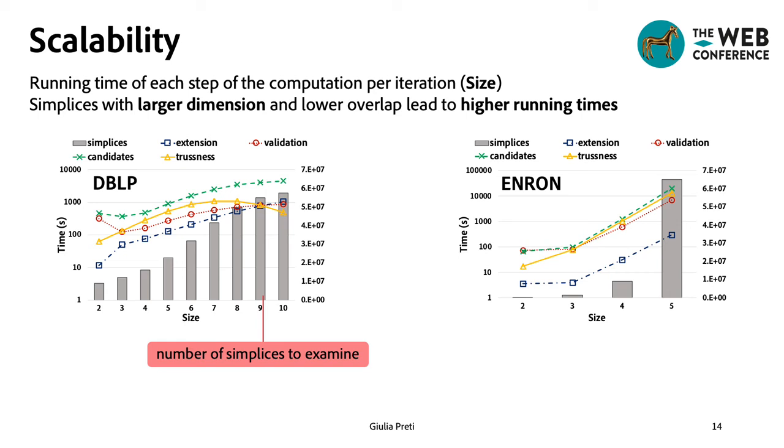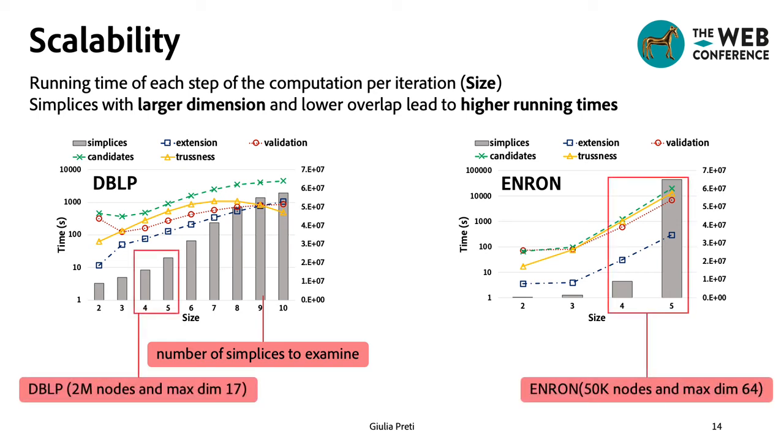However, as we can see, despite DBLP is much larger than Enron, the running time is far smaller. This is due to the fact that the dimension of the simplices in Enron is larger and their overlap is lower, which means that the number of simplices to examine increases faster with the simplex size.